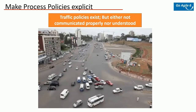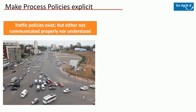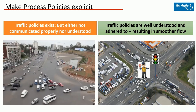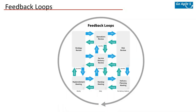The next principle is making process policies explicit. What he means is there could be policies established but unless you explicitly communicate them, sometimes they're not of much use. Traffic policies exist but either they are not communicated properly or not understood, and that can lead to chaos and even accidents. If the same policies are explicitly communicated and made to be understood, the flow gets smoother — that's what we do with traffic cops or traffic lights.